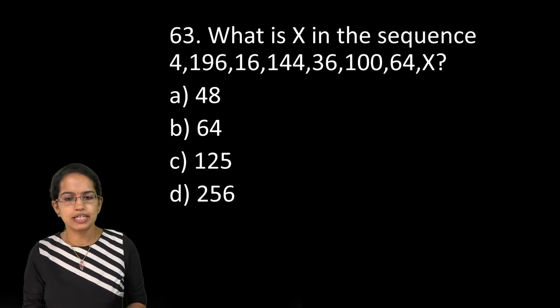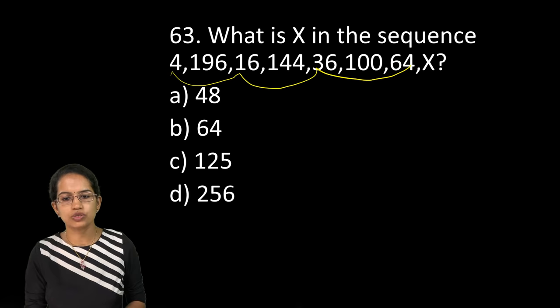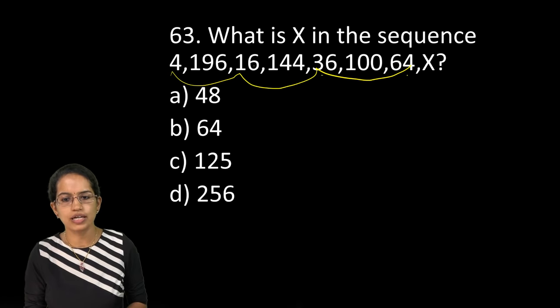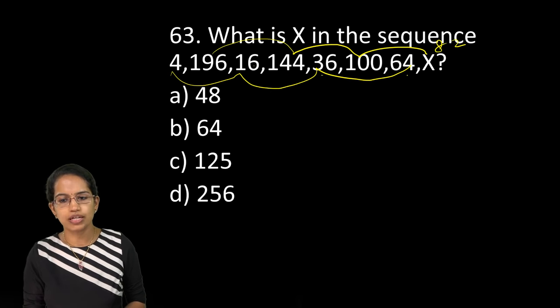Now this series is a very interesting alternate series. So you have 2 square, 4 square, 6 square, 8 square. Here you have 14 square, 12 square, 10 square and 8 square. So 8 square is how much? 64.